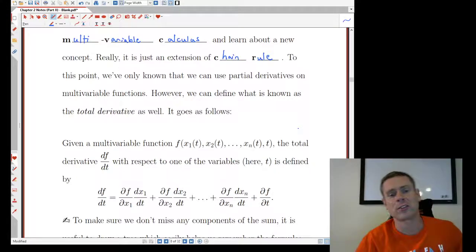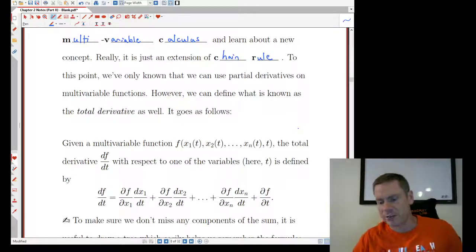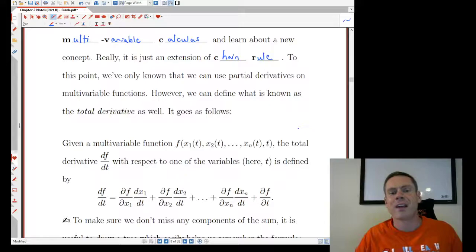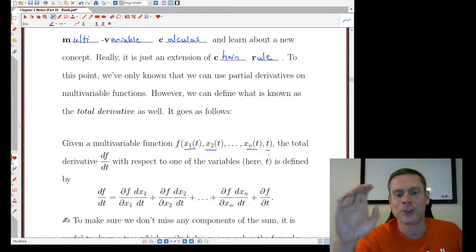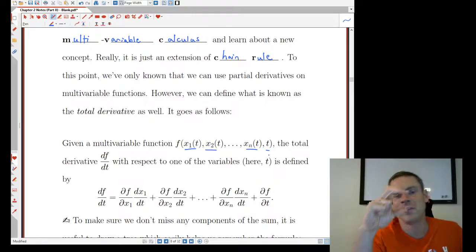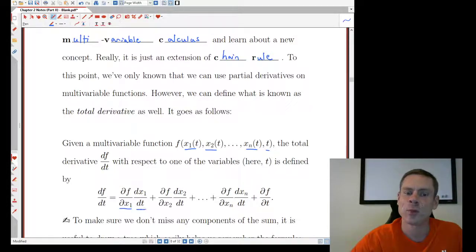Okay, here's how it works. So suppose we have a multivariable function, a function of more than one variable. So here I have f of x1, x2, x through xn, and all of those possibly depend on t and t itself. So we have a function that depends on all of these kinds of things. Here's how the total derivative is defined. It's going to look like a mouthful, and we're going to get through it because you're going to see that it's not so bad. So we have df/dt equals, we have ∂f/∂x1, the partial of f with respect to x1, times dx1/dt, plus ∂f/∂x2, dx2/dt, and so on. We go through all of the variables like this and then add the partial of f with respect to t itself.